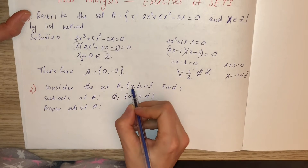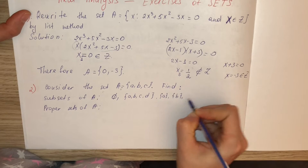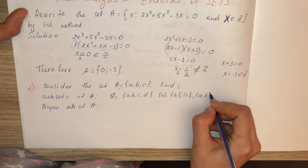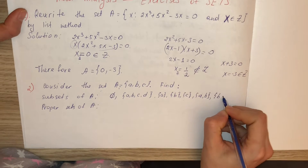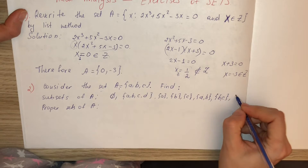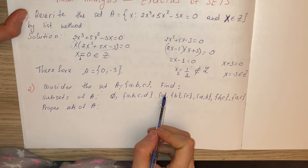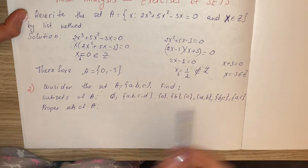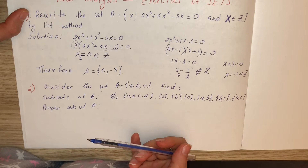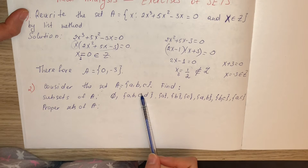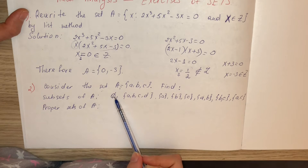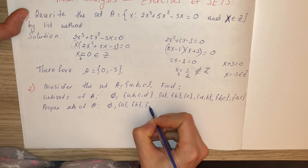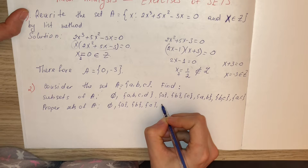Also {a, b}, {a, c}, {b, c}, and {a}, {b}, {c}. That gives us 8 subsets total. The number of subsets of a set with n elements is 2ⁿ. We have 3 elements, so 2³ = 8.